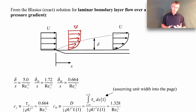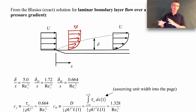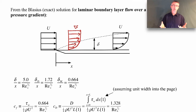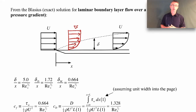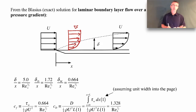The Blasius solution is not something you can write down like y equals some function of x. It's essentially a differential equation, and then you solve that differential equation numerically. So it's considered an exact solution to within whatever numerical accuracy you want. The things we typically solve for include the boundary layer thickness (the 99% thickness), the momentum thickness, the displacement thickness, the wall shear stress, and a drag force.